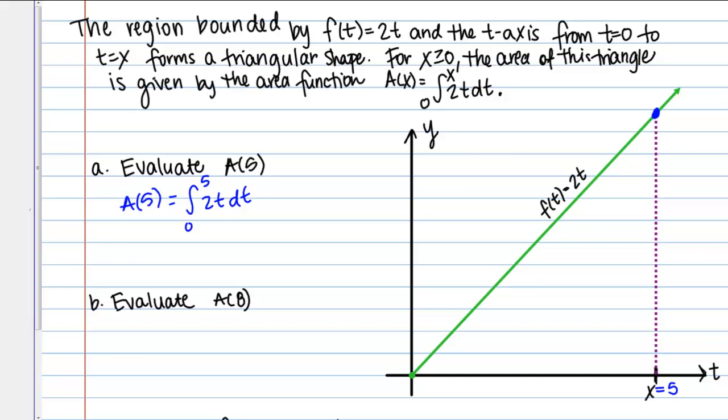X just represents where I am along this t-axis and it's called x because it's a variable. It can change, but now I'm looking specifically when x = 5. That's going to correspond to t = 5. Then to find the height, I'm just going to plug in 5 to this 2t. The height is going to be 10.